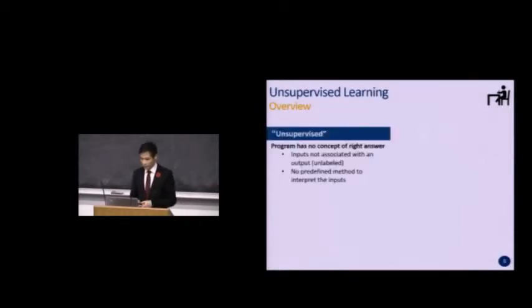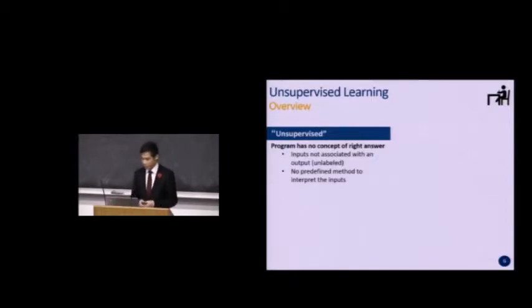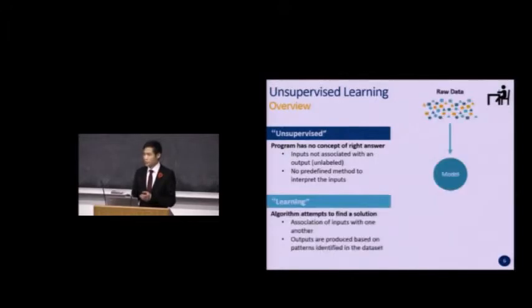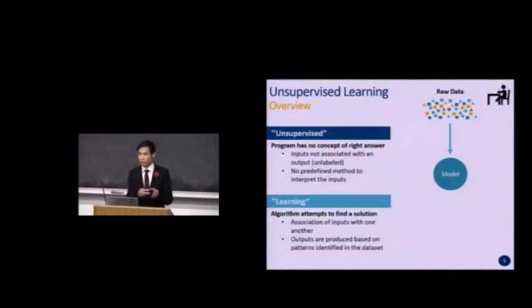In unsupervised learning, the program does not have a concept of the right answer — inputs are not associated with any output. For simplification, say you give it a set of raw data represented as colored shapes, but the machine is not given labels. The learning part involves telling it to group inputs together and find patterns. The output might be the clustering of different shapes: a group of circles, squares, and triangles.